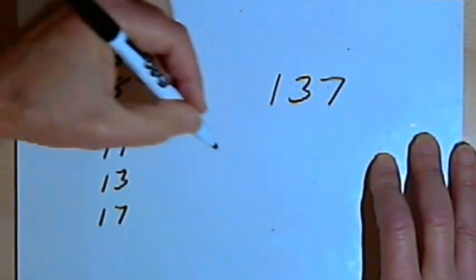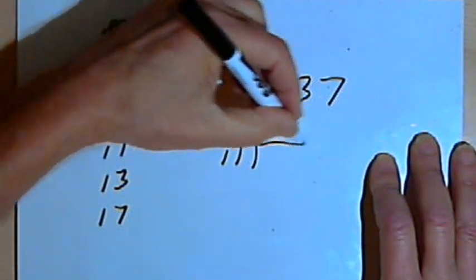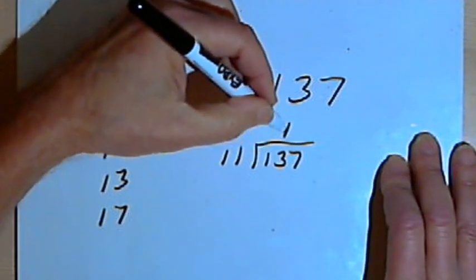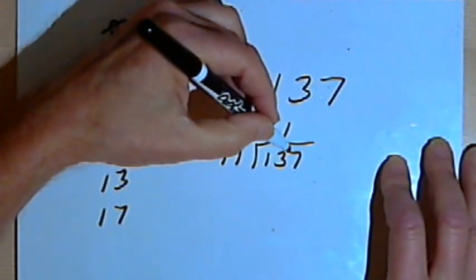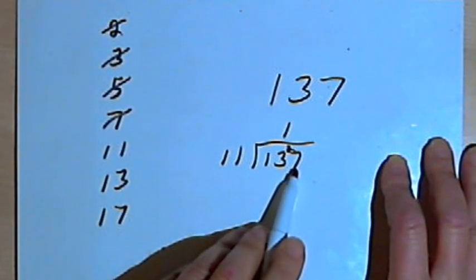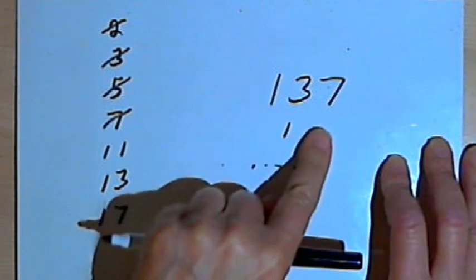How about 11? Well, if I divided 11 into 137, 11 would go into 13 one time, and I'd have a 2 remainder, and I'd have to be able to divide 11 into 27. I can't do that either. So 11 is out.